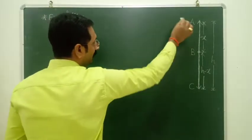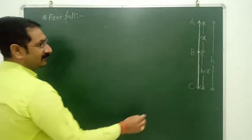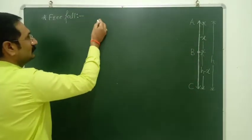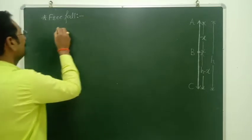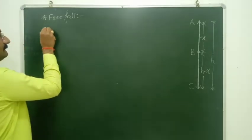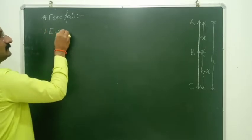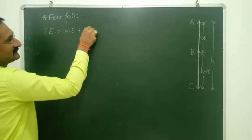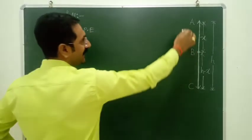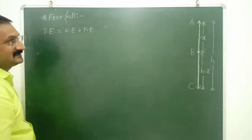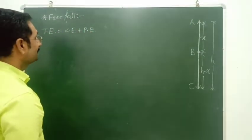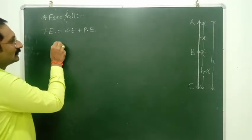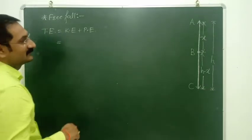So friends, let's find out the total energy at point A first. Total energy is equal to kinetic energy plus potential energy. Eek ghost yaha tika ni lakshat geeta na — the energy formula we studied before, that we need to memorize.